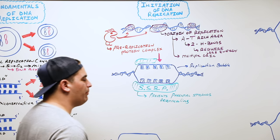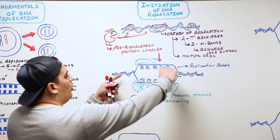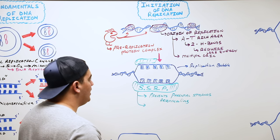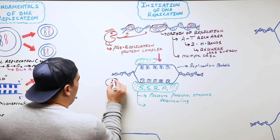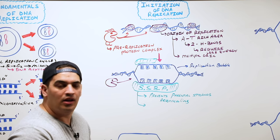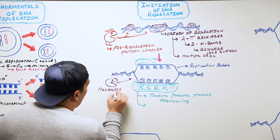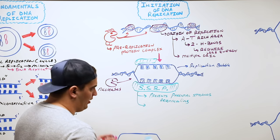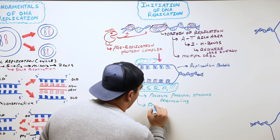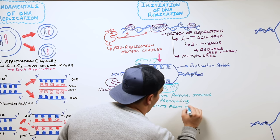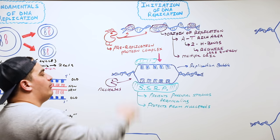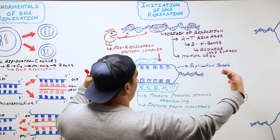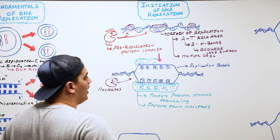So to summarize so far: the pre-replication complex binds to the origin of replication (the AT-rich area), separates it, and forms a replication bubble. Single-stranded binding proteins bind to the single strands, prevent them from re-annealing, and protect them from nucleases. Once you form the replication bubble, you form two Y-shaped ends called replication forks.